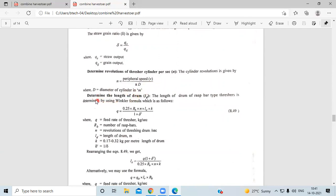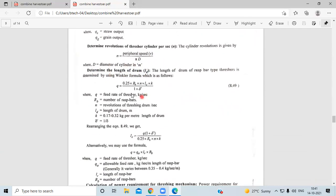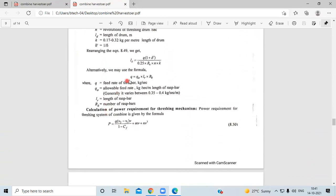D is the diameter of the cylinder in meters. Then determine the length of the drum. Q equals 0.25 Rp N L D into K times 1 plus delta dash. These are the particulars. By rearranging this formula we can determine the length of the drum. This is the alternative formula also.